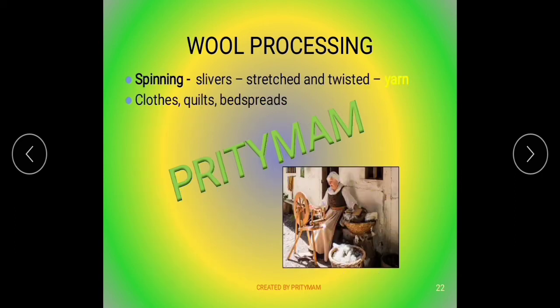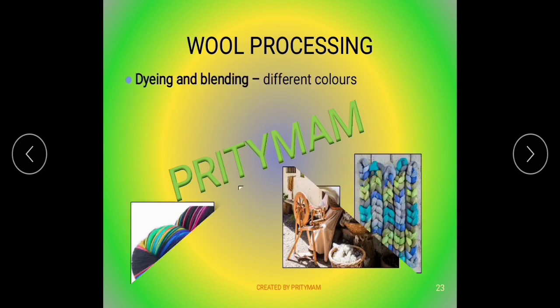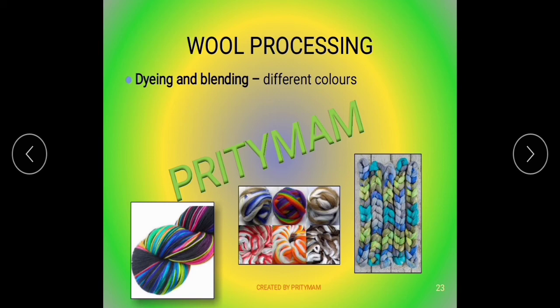The next process is called spinning. The slivers are stretched and twisted, and the resulting yarn is used to make cloths, quilts, bedspreads, and so on. Here you can see the process of spinning going on. The last process of wool processing is called dyeing and blending.